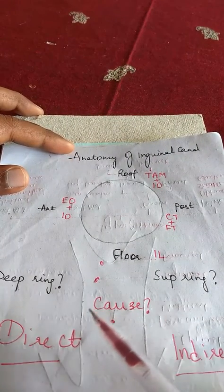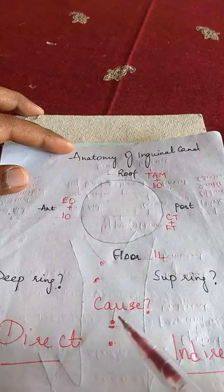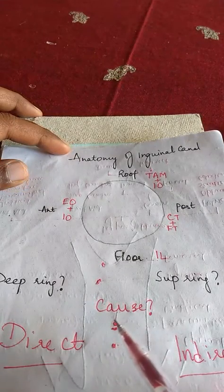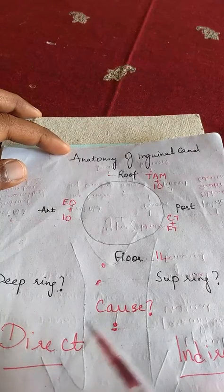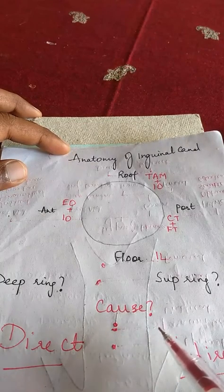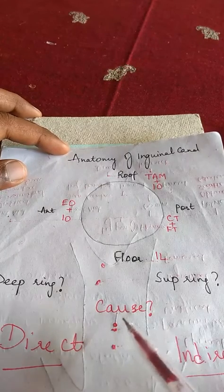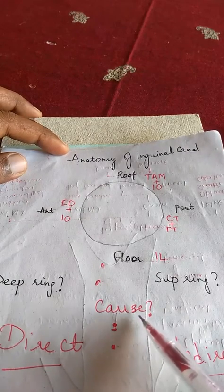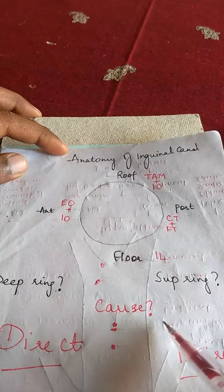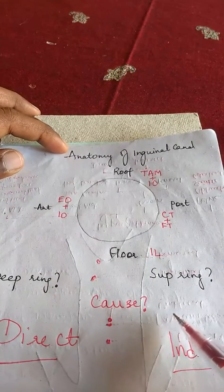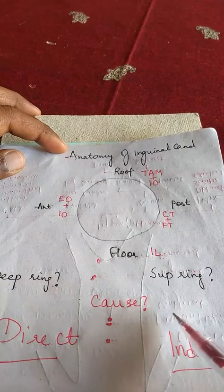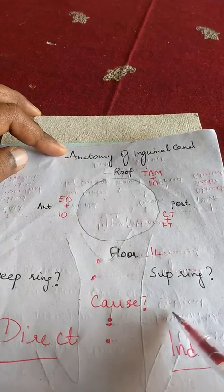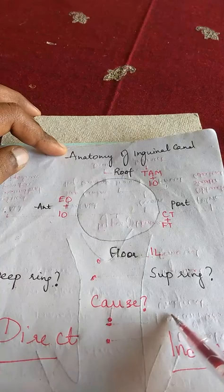Now let us move on to the causes of hernia. Any cause can be classified as primary or secondary. Primary is when the hernia occurs unprecedentedly, and secondary is because of some other factor causing the hernia. The most common primary factor is congenital weakness of the abdominal wall. Secondary causes are due to raised intra-abdominal pressure, which can result from chronic cough, constipation, repeated pregnancy, habitual weight lifting, and obesity.